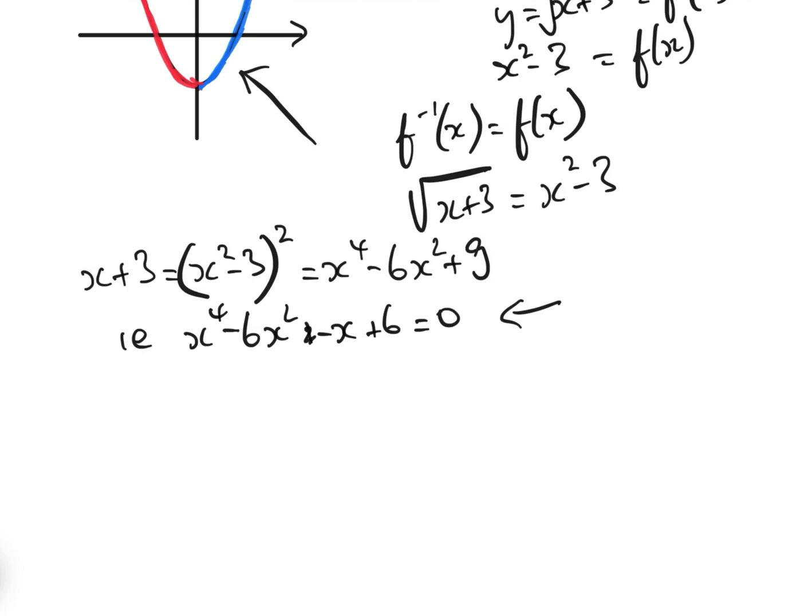Now fortunately, if we put in 1 by inspection, 1 take away 6, take away 1, add 6, we get 0. So therefore we know that x minus 1 is a factor of this, and then when we take that x minus 1 out, we will get x cubed, add x squared, minus 5x, minus 6, equals 0.